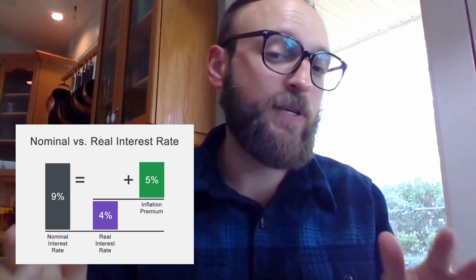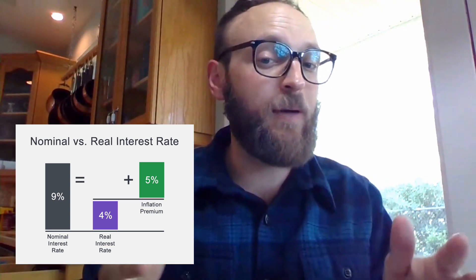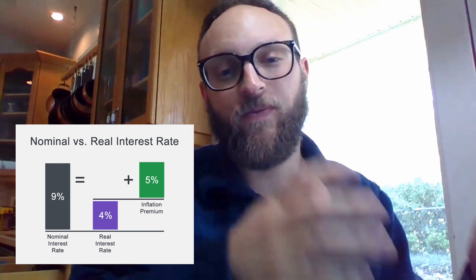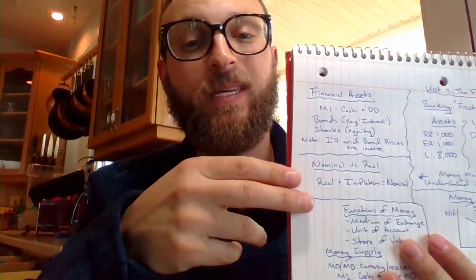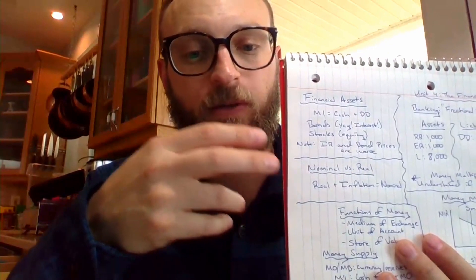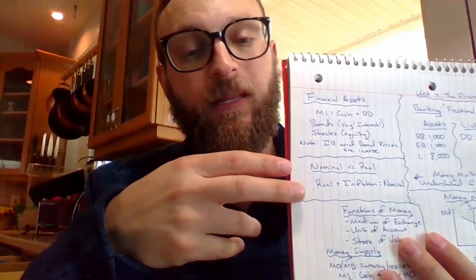The next thing that kids always struggle with — I think the words are what throw people off because we get these word problems with a bunch of words and numbers and you're like, what the heck should I do? If there's ever a question where they give you a real value, a nominal value, or an inflation price level change value, they're almost certainly talking about the equation: real plus inflation equals nominal. There's nothing super complicated happening here — just write the equation down, plug the numbers in, and you're going to get the problem right.